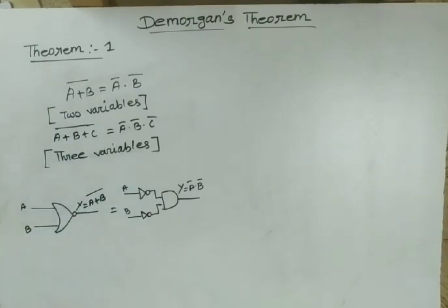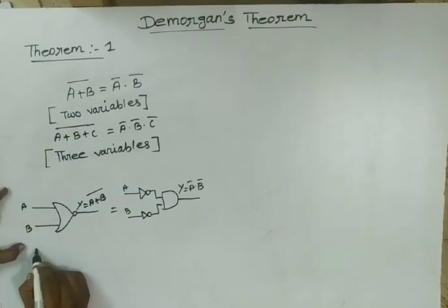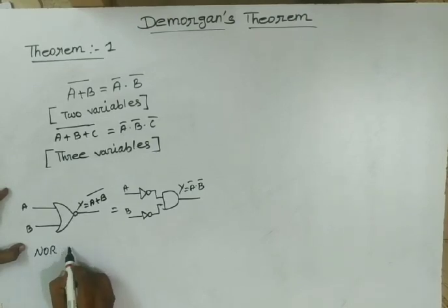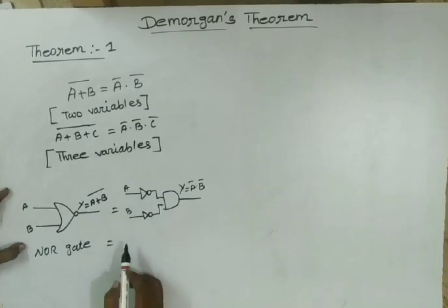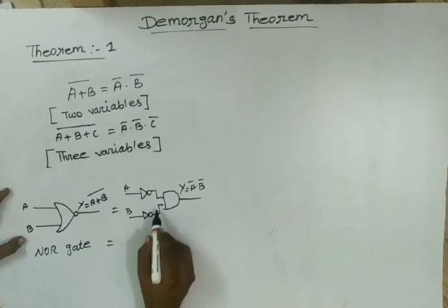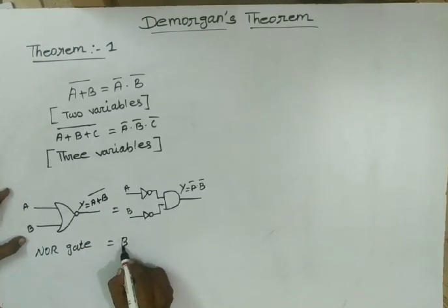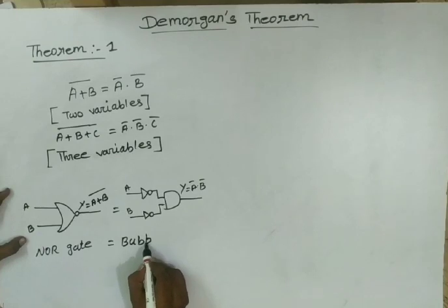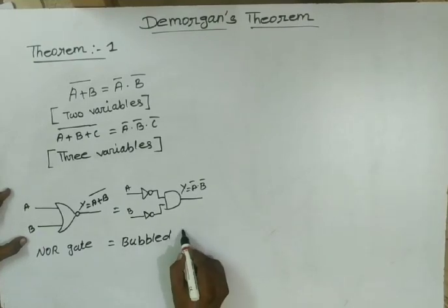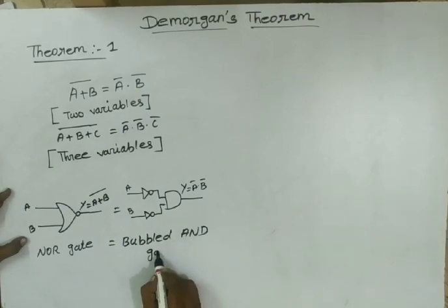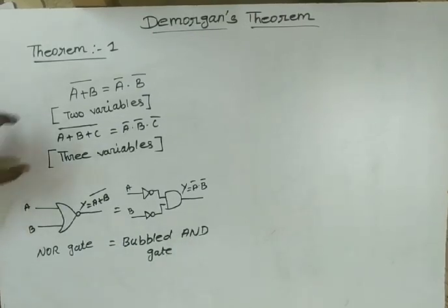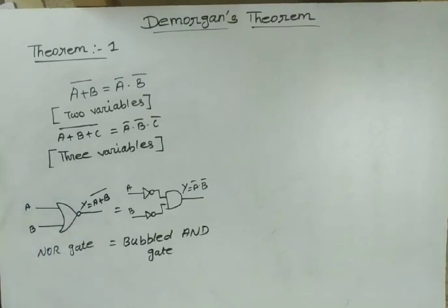This one — NOR gate. This one — NOR gate. Equal to this one — bubbled AND gate. It is called bubbled AND gate. They verified the equation and diagram.